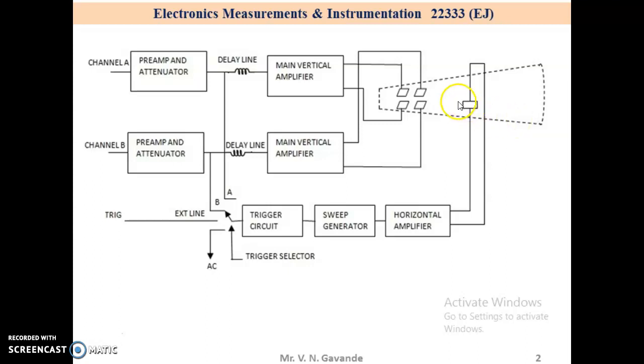It consists of two electron guns and that is why it consists of two pairs of vertical deflection plates and common horizontal deflection plates. At a time on a screen you can see stable channel A and channel B signals on a CRO screen.